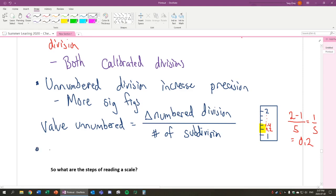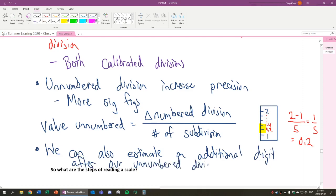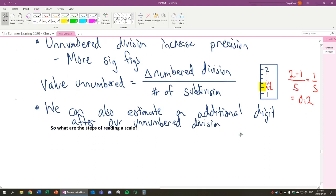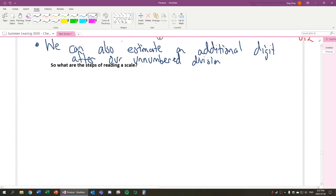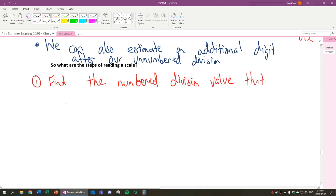Now, what we also need to know is that we can also estimate an additional digit after our unnumbered division. So why is that important? Well, first of all, let's talk about the steps to reading a scale.